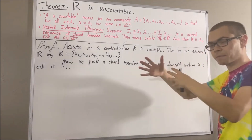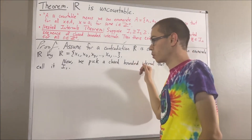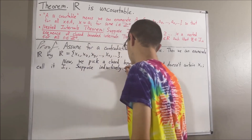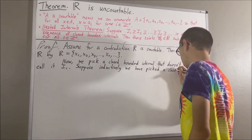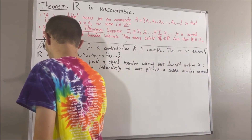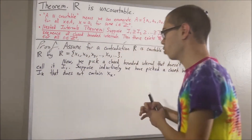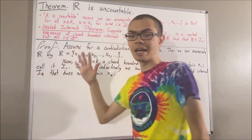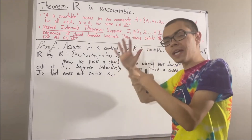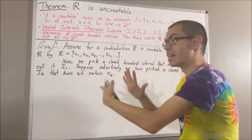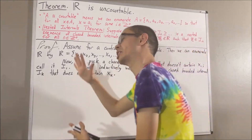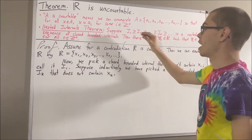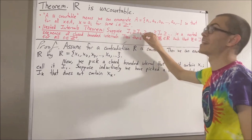Now let's suppose inductively we have picked out a closed bounded interval I_k which does not contain x_k. From here, we want to pick a closed interval I_{k+1} that does not contain x_{k+1}, and we want to pick I_{k+1} so that I_{k+1} is contained in I_k. Because if we do that, that will guarantee that we will have constructed a sequence of closed bounded intervals that is nested.